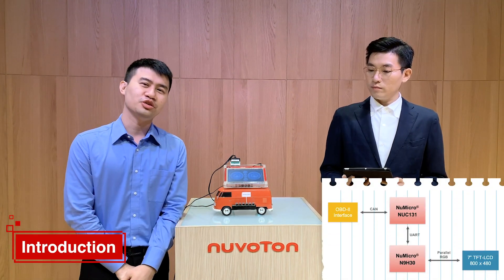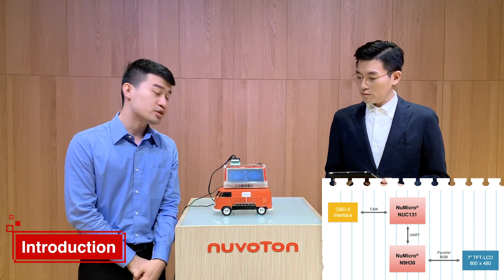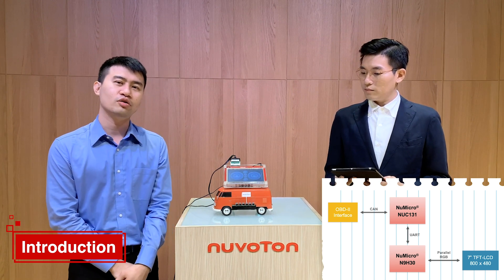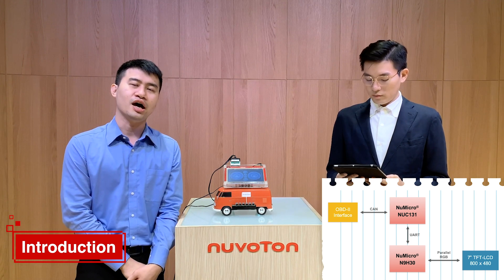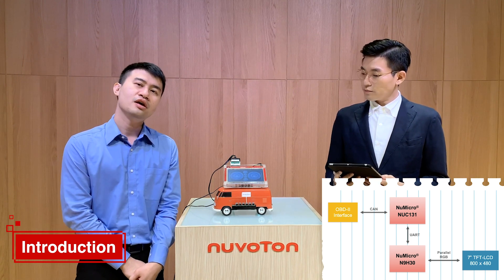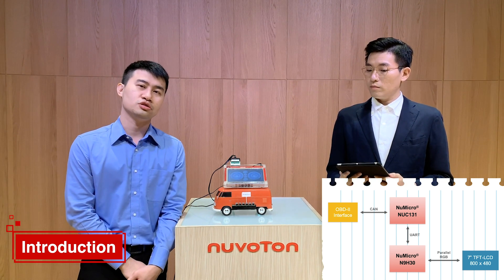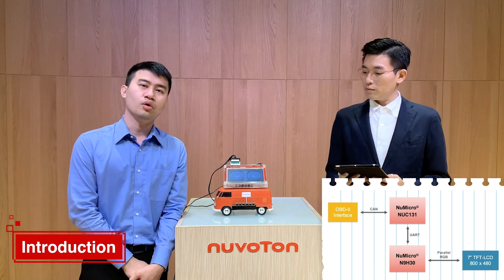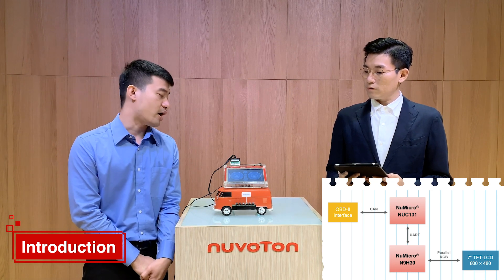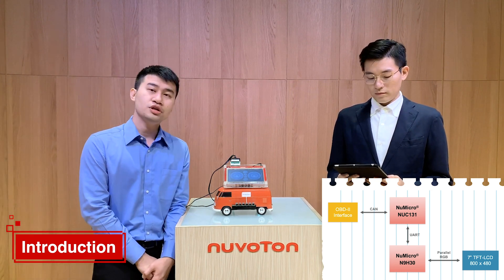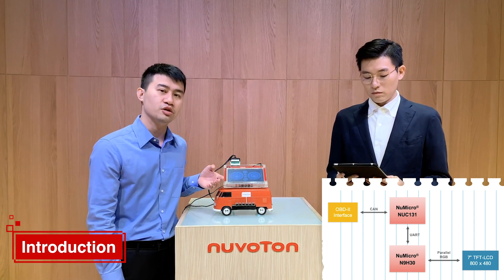Today we would like to introduce OBD on-board diagnostics. OBD consists of the NUC131U microcontroller and the N9H30 microprocessor. NUC131U provides a CAN bus to log OBD data such as vehicle velocity, engine speed, engine temperature, and in-car temperature. NUC131U will log that data and transmit it to the N9H30 via UART. The N9H30 will display that information on a 7-inch TFT LCD panel.